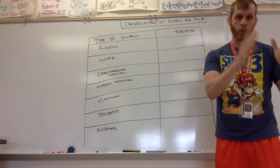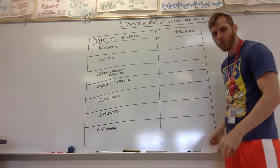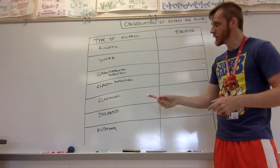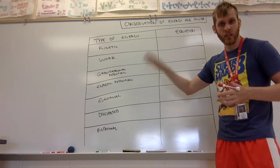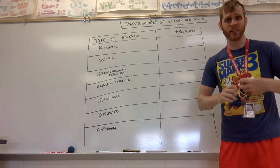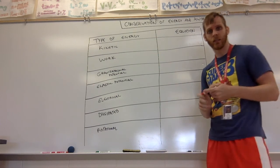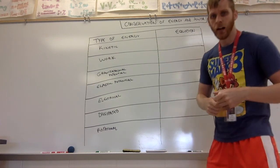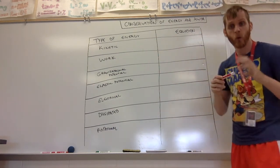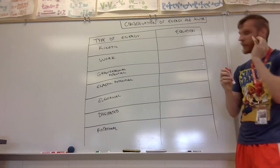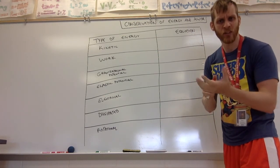Energy simply changes from one form to the next. In IB1 we focused on a couple different types of energy; we're going to add to this list in IB2. There are lots of different types — sound, light, heat, and others — but we'll review what we covered in IB1 and then go over how to write conservation of energy equations, because those are so useful for solving physics problems.